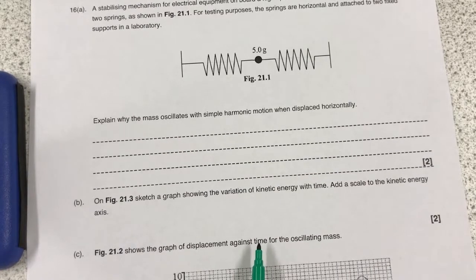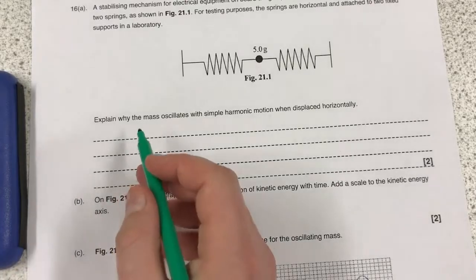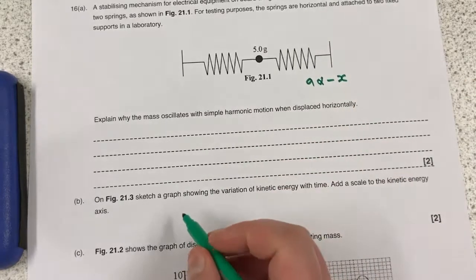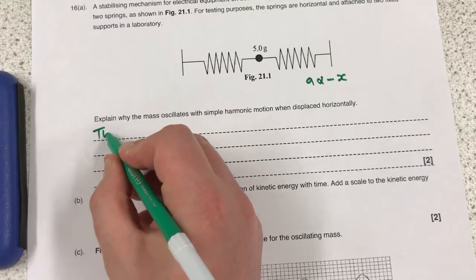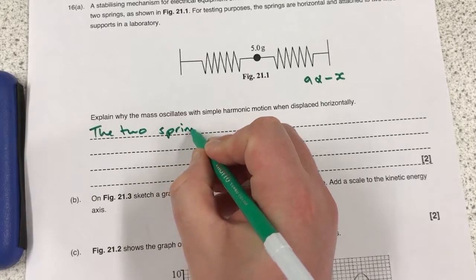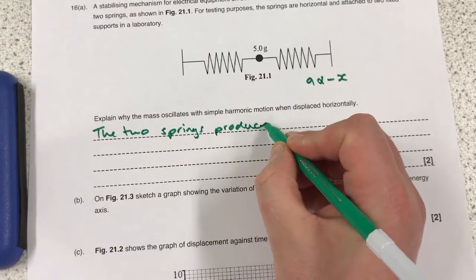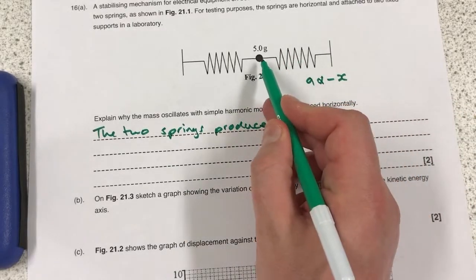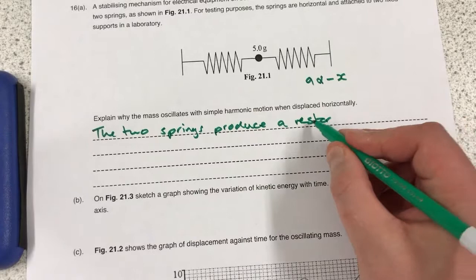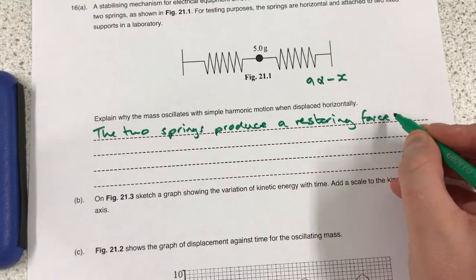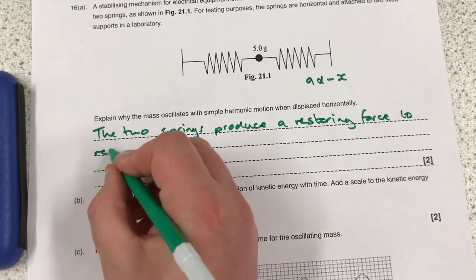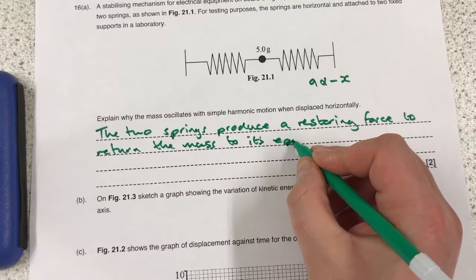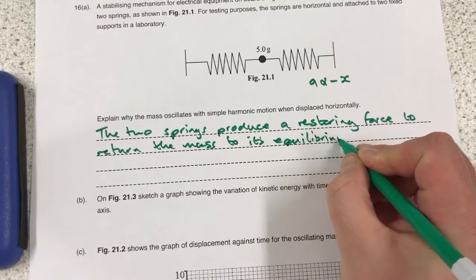I think this would be for the same reason anything oscillates with simple harmonic motion. And that's going to be because there is an acceleration that is directly proportional to the negative of the displacement. So let's communicate that with the two springs. I'll use the word restoring because they're both trying to push the mass back to where it started. So when I pull it this way, it's going to try and push it back. When I pull it this way, it's going to try and push it back. Restoring force. Both springs produce a restoring force to return the mass to its equilibrium position.